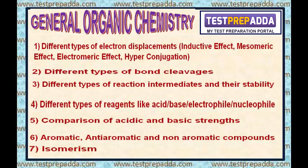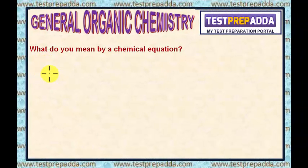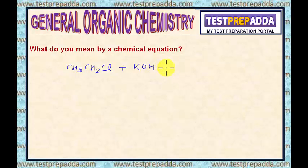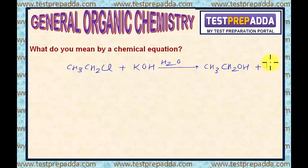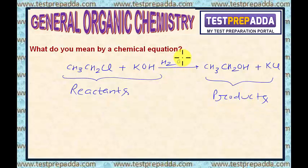I will start this session with the term chemical equation. What do you mean by a chemical equation? You must have seen different organic reactions many times. For example, if I write CH3CH2Cl plus KOH in H2O, the products we get are CH3CH2OH plus KCl. On the left hand side we have reactants, on the right hand side we have products, and this is the solvent.